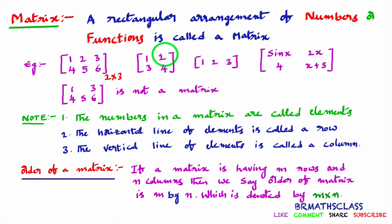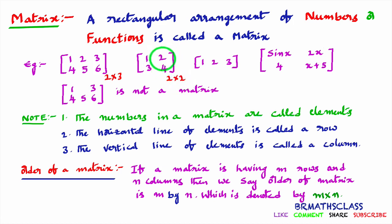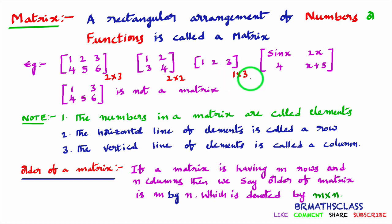Observe this matrix — what is its order? How many rows are there? First row, second row — two rows. How many columns? First column, second column — so the order is two by two. Observe this — how many rows? Only one row. How many columns? One, two, three — three columns. The order of this matrix is one by three.